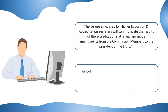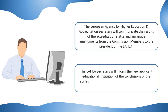The EAHEA Secretary will inform the applicant educational institution of the conclusions of the accreditation report. If applicable, in the case that full accreditation is gained, the European Agency for Higher Education and Accreditation Secretary will send the corresponding accreditation certificate.